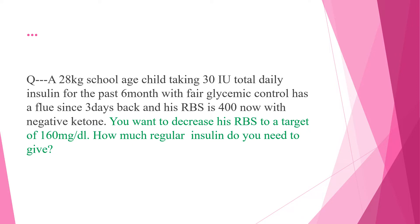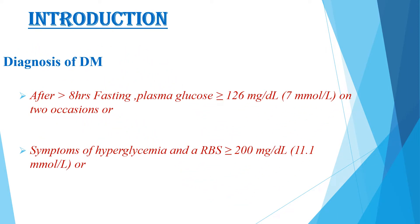I will answer this question in the middle of the discussion. Now let us go to the discussion. Starting from the introduction, diagnosis of type 1 DM is made by one of the following three criteria: fasting plasma glucose greater than or equal to 126 mg/dL on two occasions after 8 hours of fasting; or symptoms of hyperglycemia and random blood sugar more than or equal to 200 mg/dL; and hemoglobin A1c more than 6.5% is also a diagnostic criterion.